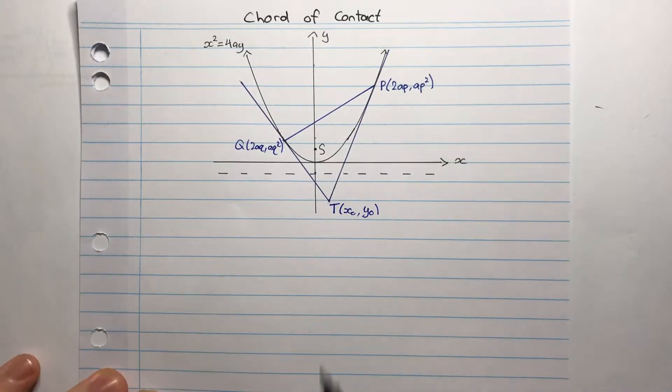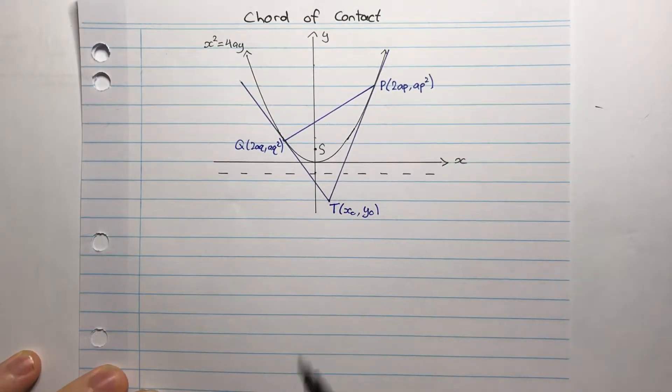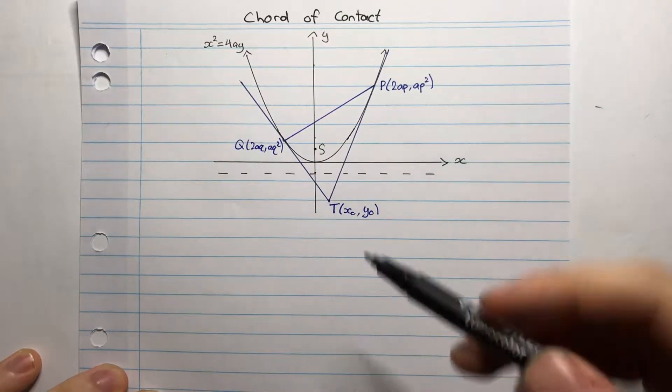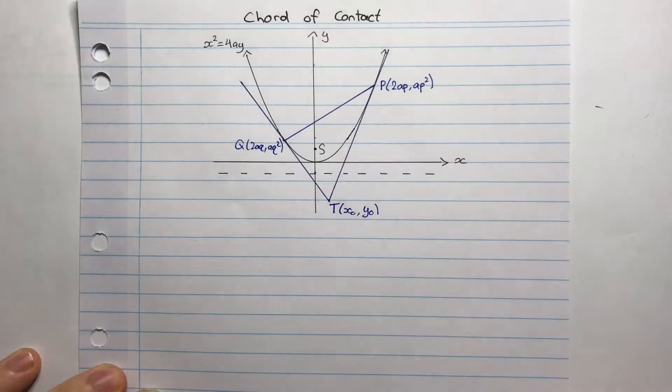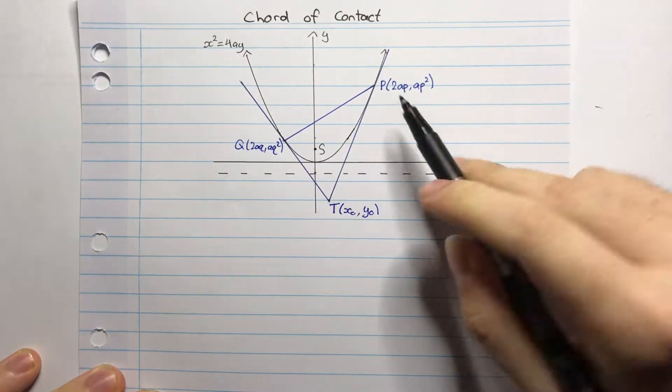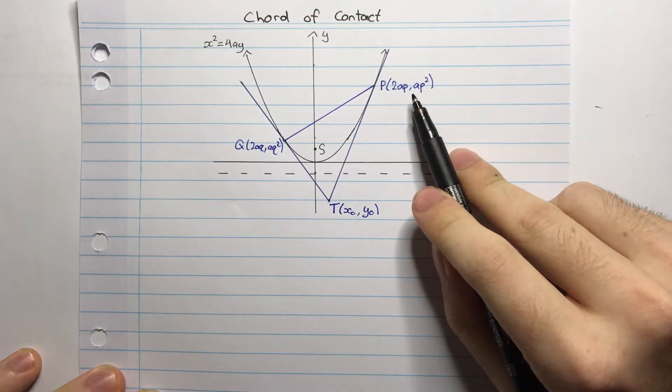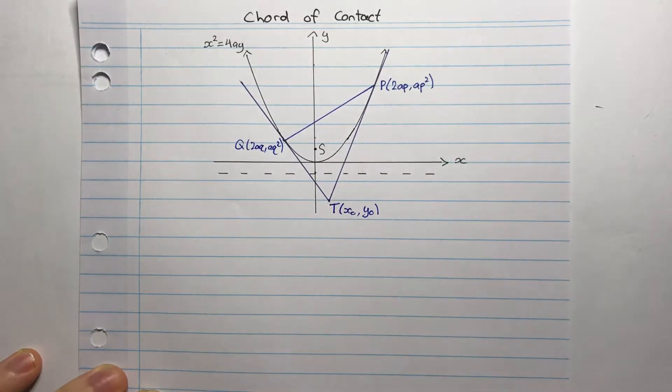Well, let's suppose that we have a point T given by x0, y0. Now from this point we can draw two tangents to the parabola as such, and of course the tangent meets the parabola at exactly one point. So for the first tangent it meets it at point P, which can be given by these parametric coordinates, and similarly for Q given by these parametric coordinates.